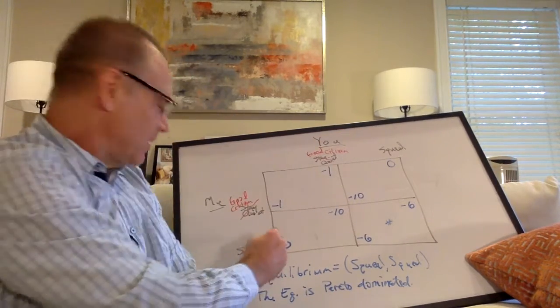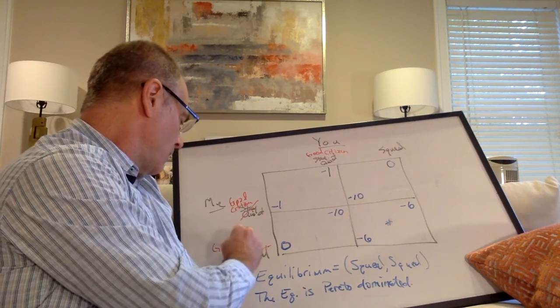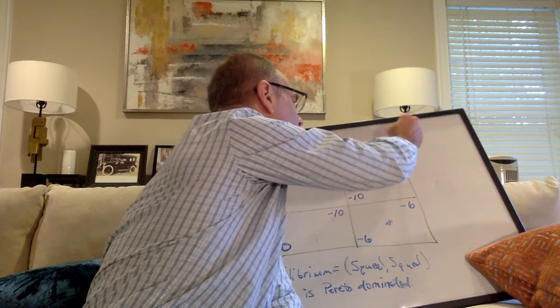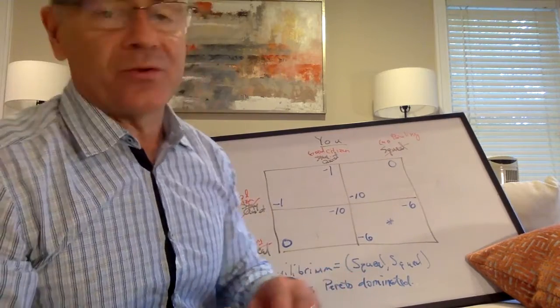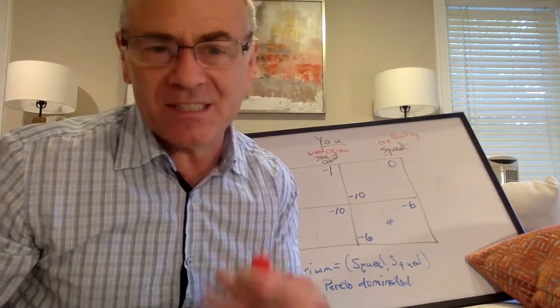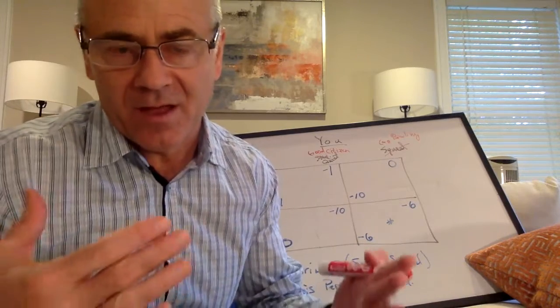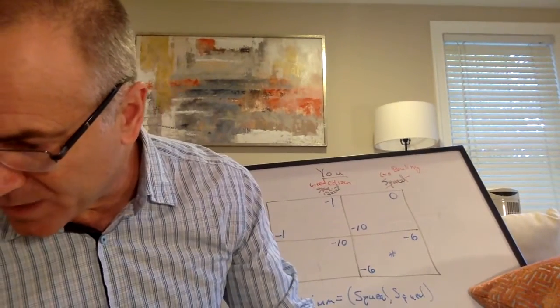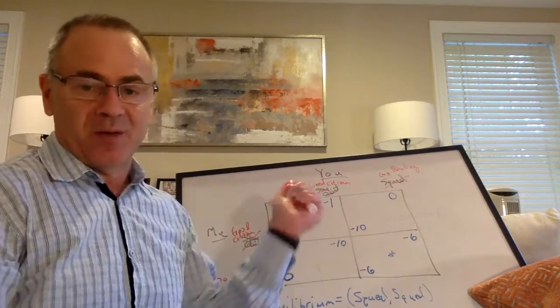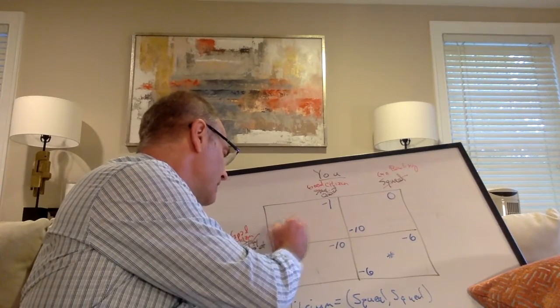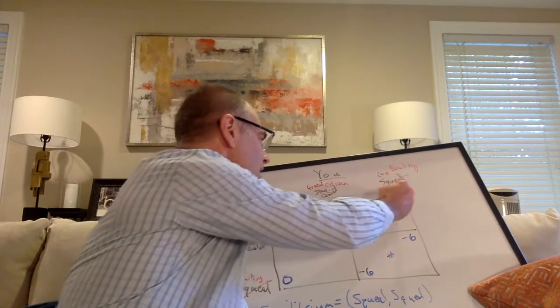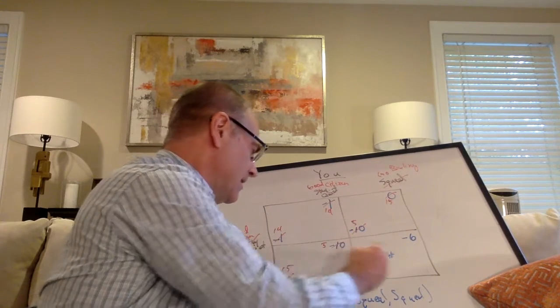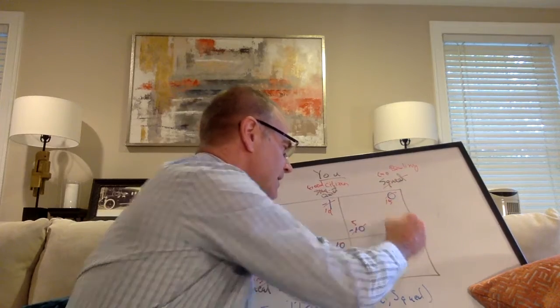I hope you'll trust me on this. If I add the same number of units to each payoff - in fact, what I'm going to do is add 15 to each of these payoffs. Negative 1 plus 15 is 14, 0 is 15, negative 10 is 5, negative 6 is 9. We have these new payoffs. It's a little bit easier to understand if you think of it with positive numbers in this case.